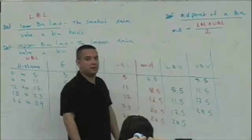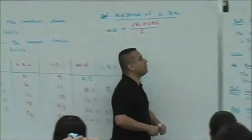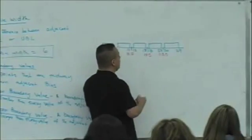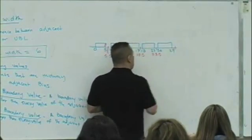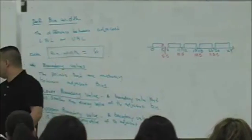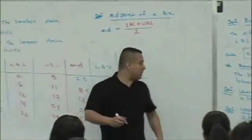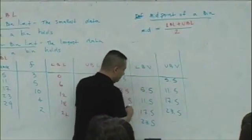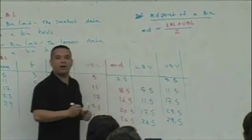In fact, what would you have if there were another bin? If there was another bin, what would that boundary value be? Let's take 23.5 and add, what's the bin width? Would it be 29.5? It would be 29.5.